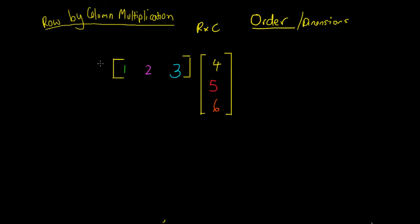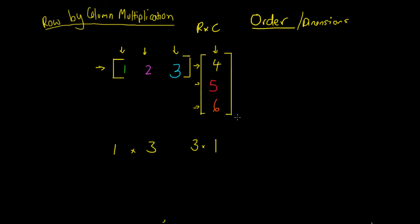If we're looking at the matrix on the left, it has one row going across and one, two, three columns. So we would say it is a one by three matrix. If we look at the matrix on the right, it's the opposite — it has one, two, three rows and only one column, so we would say it is a three by one matrix.